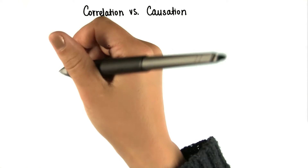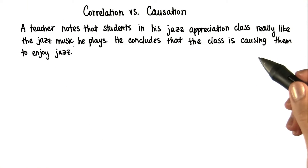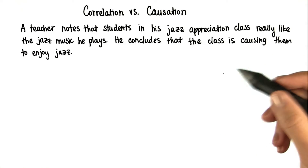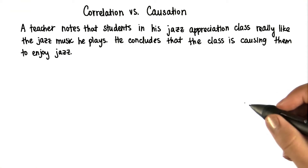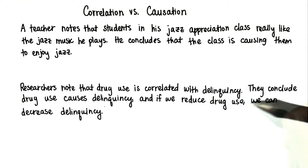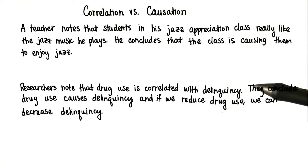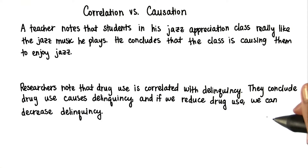Let's go through a few examples. A teacher with a jazz appreciation class says that his students really like the jazz music that he's playing, and he concludes that the class is causing the students to enjoy jazz music. Another situation: researchers note that drug use is correlated with delinquency. They conclude drug use causes delinquency, and if we reduce drug use, we can also decrease delinquency.